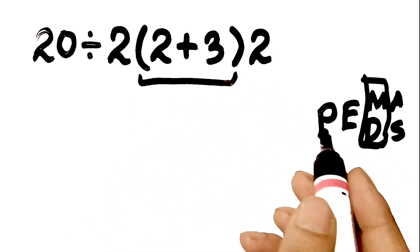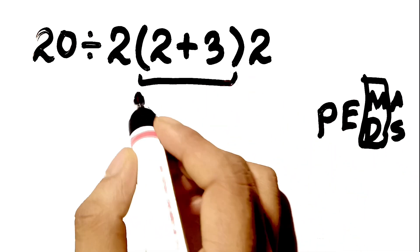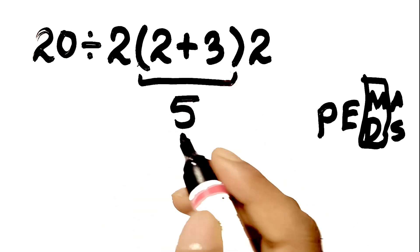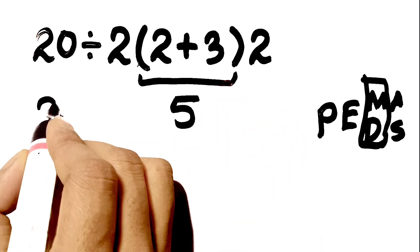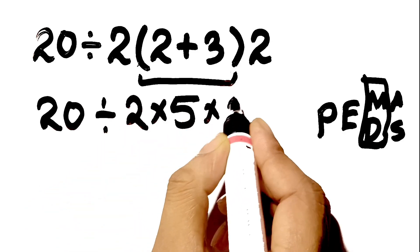Okay, so according to PEMDAS, first we have to do this parenthesis. Inside this parenthesis we have 2 plus 3, which equals 5. So the expression becomes 20 divided by 2 times 5 times 2.